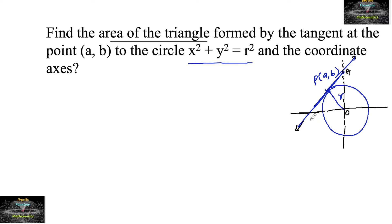O, A, and B. OAB is a triangle formed. We need to find the area of this triangle with the coordinate axes.